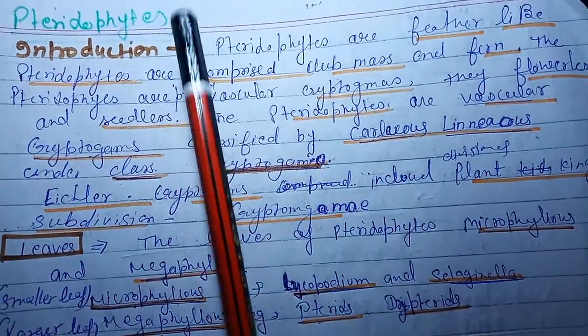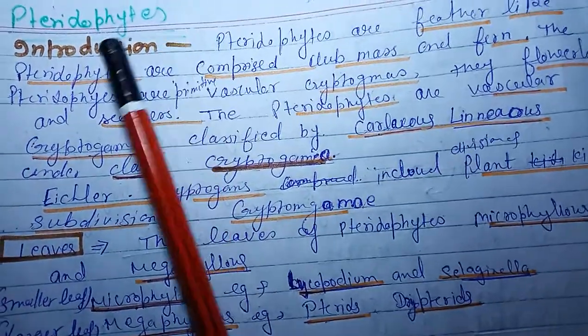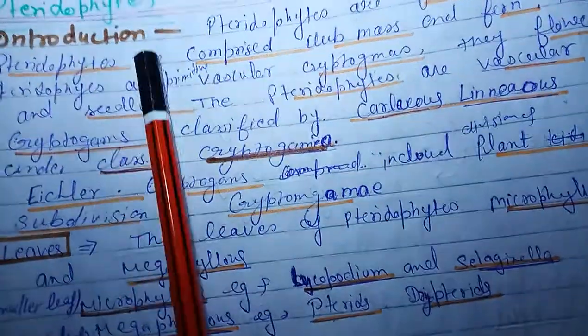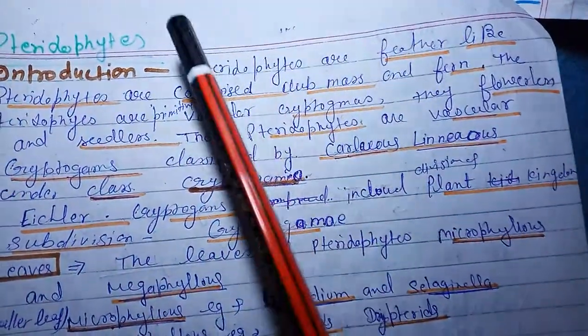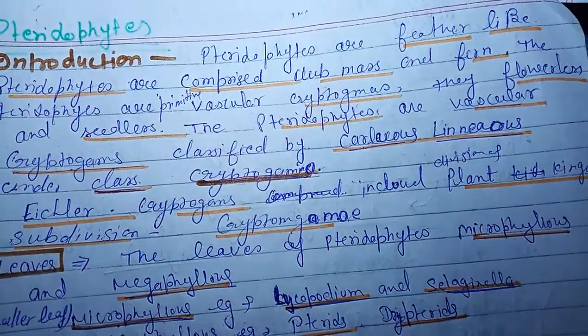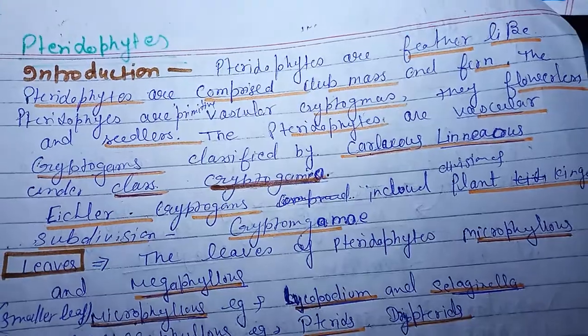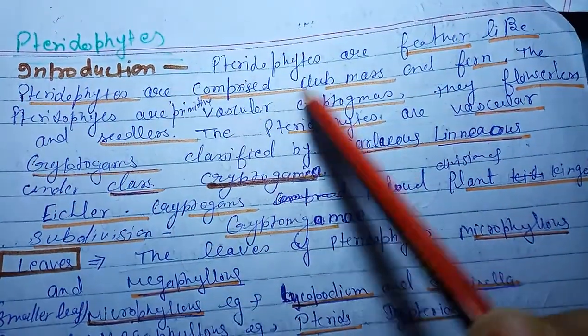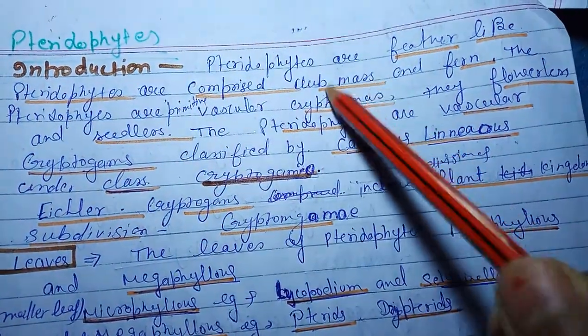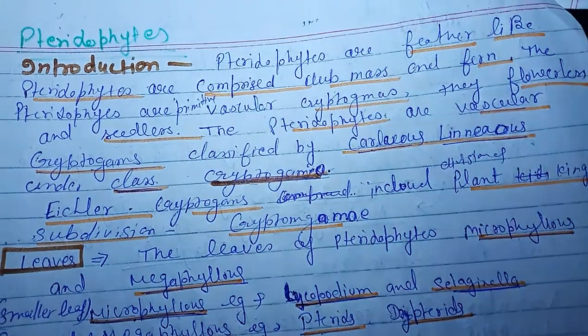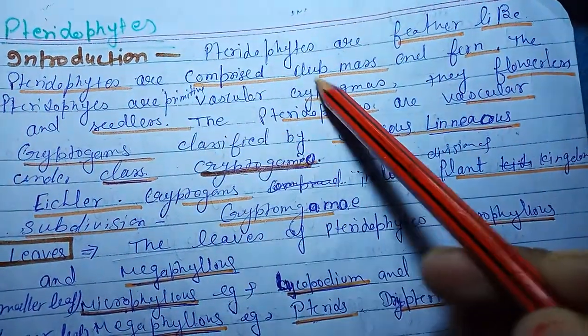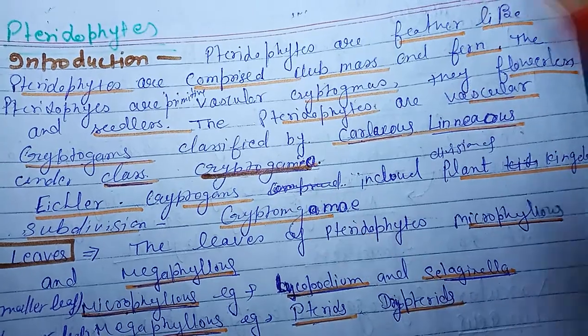Pteridophytes: general characteristics and salient features. Introduction of pteridophytes. Pteridophytes are those plants with an appearance like a feather. The pteridophytes are in comparison with the club mosses. Pteridophytes are primitive vascular cryptogams and they are flowerless.